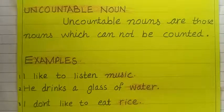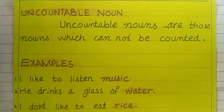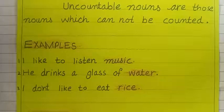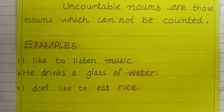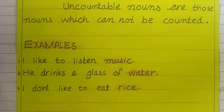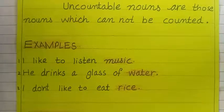Let's read the definition. Uncountable nouns are those nouns which cannot be counted. I have a few examples of uncountable nouns. 'I like to listen to music.' Music is also a noun, but it is uncountable — we cannot count music. 'He drinks a glass of water.' Water — we are not able to count the drops of water, but water is a noun, so it is uncountable. 'I don't like to eat rice.' It is not easy to count the rice. So these are uncountable nouns.